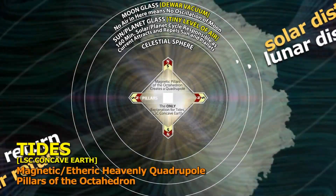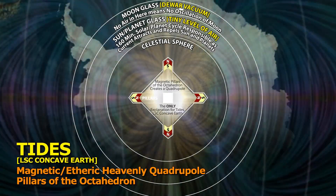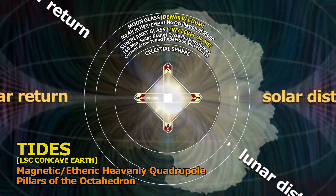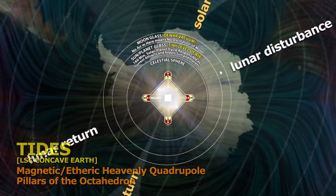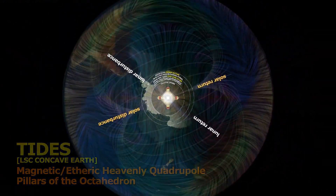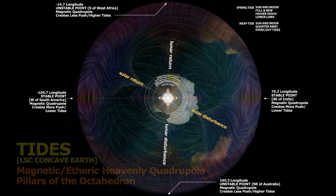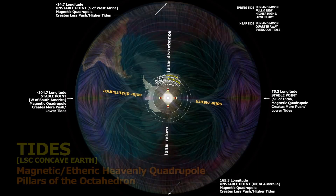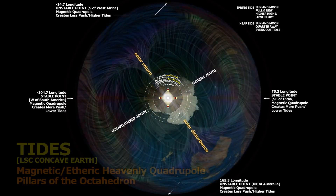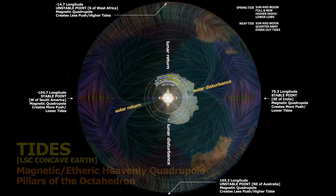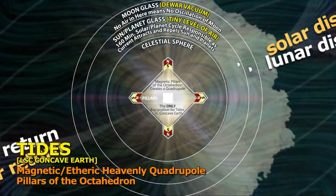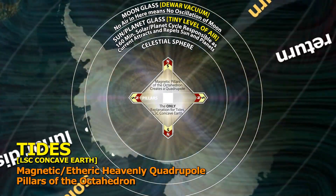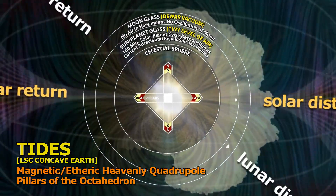My tide work continues making progress here. I downloaded this quadrupole animation from somebody and overlaid it upon my existing animation, and lo and behold we have a better understanding of how the tides are working. As I mentioned before in my previous video about tides, on the left and right we have the stable equilibrium points.